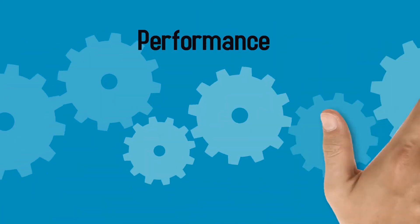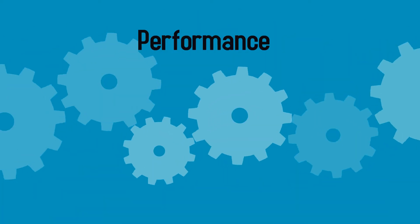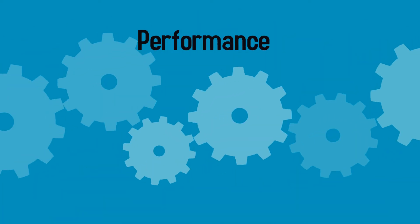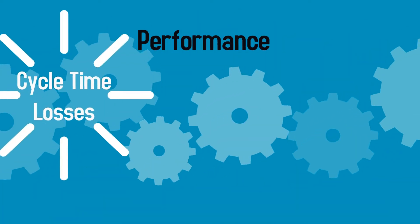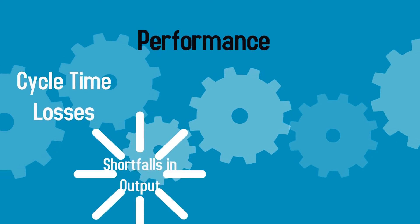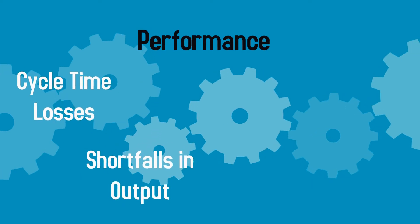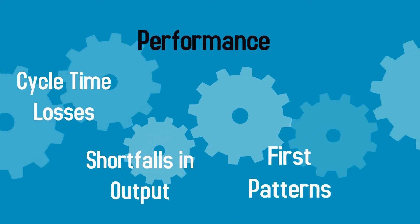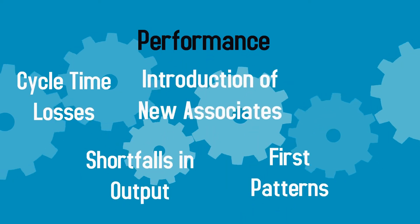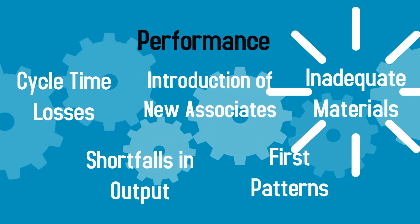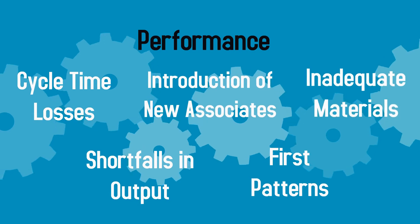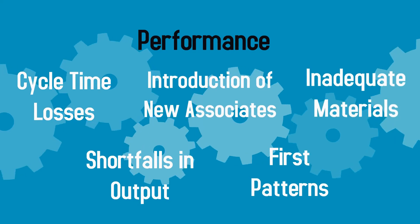A performance deviation can have many causes, such as cycle time losses, shortfalls in output, first patterns, introduction of new associates, and inadequate materials.